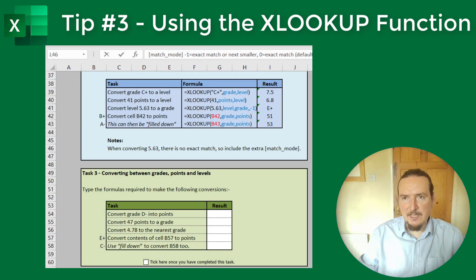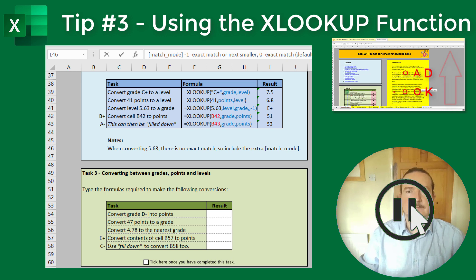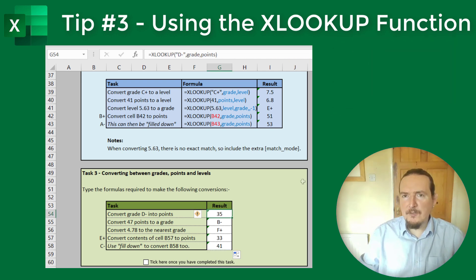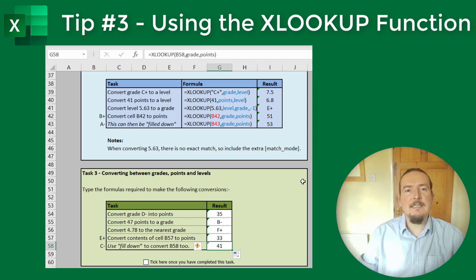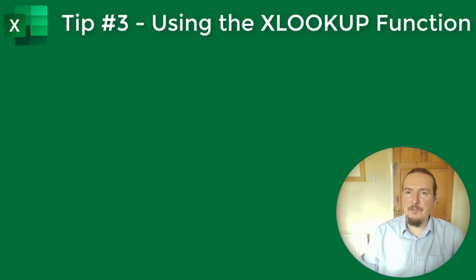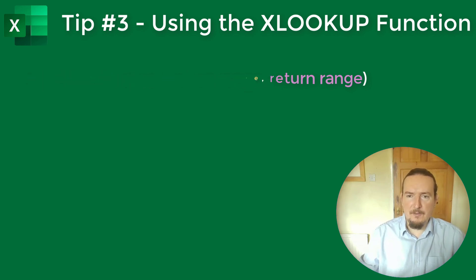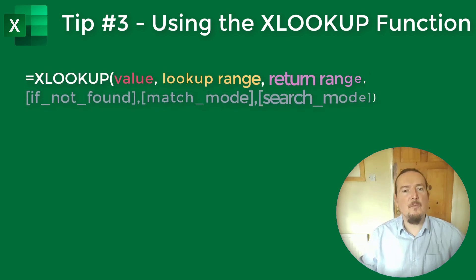Pause the video and have a go at task 3. Once you are done, come back and press play again. Welcome back — hopefully your table now looks something like this. If it does, well done, you are starting to get the hang of these. If not, have another go and see if you can get the same answers. Don't forget to tick the completed box once you are ready to move on. For the majority of times you will want to use XLOOKUP, it will be in its default basic setup with just the 3 inputs, but of course you will always have the option of those extra 3 inputs when you do need them.